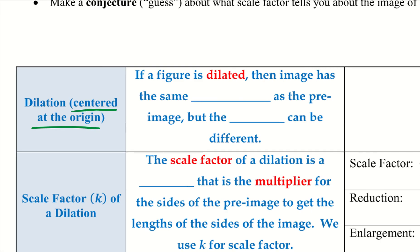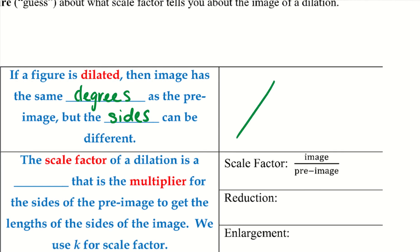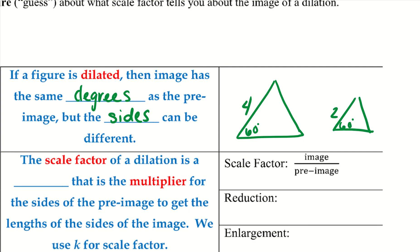If a figure is dilated, then the image has the same angles as the pre-image, but the sides can be different. For example, in an equilateral triangle all angles are 60 degrees. But one triangle might have a side of 4 and the smaller triangle might have a side of 2. So the angles stay the same, but the sides will most likely end up changing.